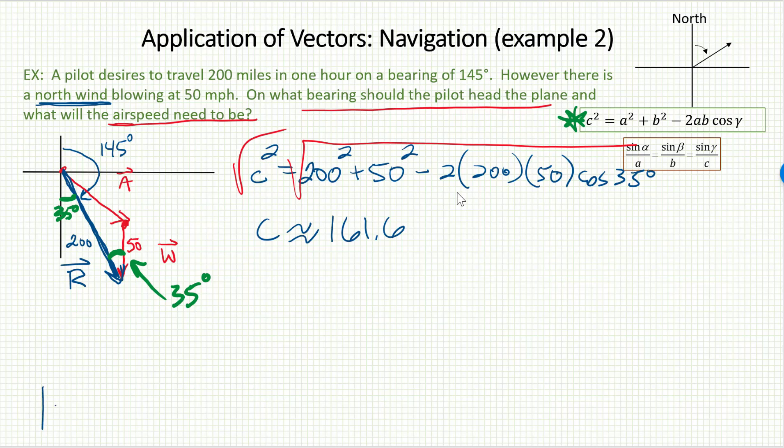Well, that is the answer to the second part of the question. The speed of the plane, what gets programmed into the plane, is 161.6 miles per hour.